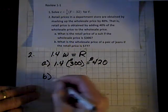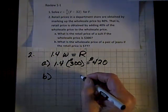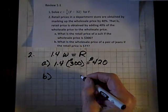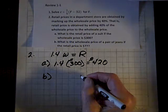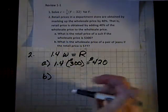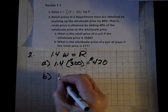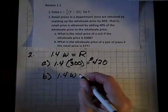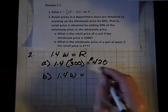So for part B, it says, what is the wholesale price of a pair of jeans if the retail price is 77 dollars? So we know that 1.4 times the wholesale price equals, in this case, 77 dollars.